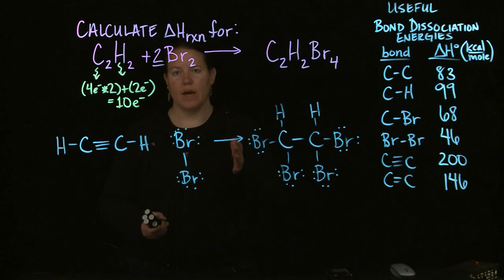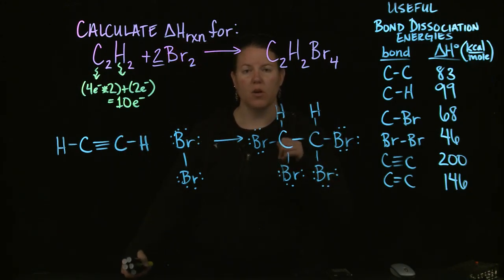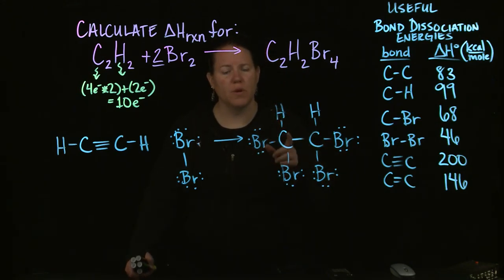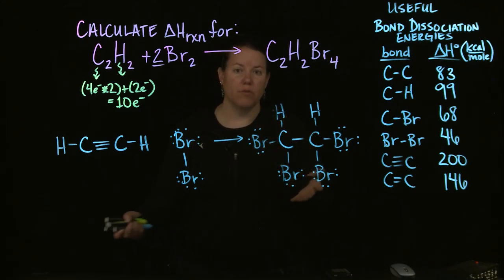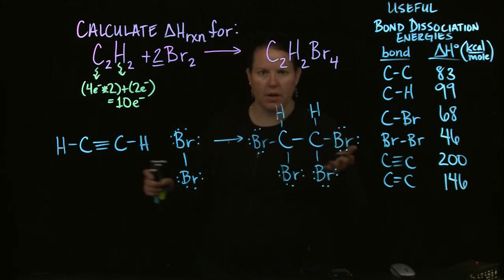Alright, so here's what we have. We have to draw out the Lewis dot structures of these. You do not have to draw out the VSEPR structures, simply because you only need to know the bonding between the atoms. You don't have to know what they look like in three dimensions, necessarily. Helps in organic chemistry, but not a requirement.